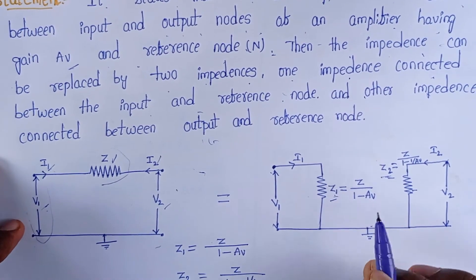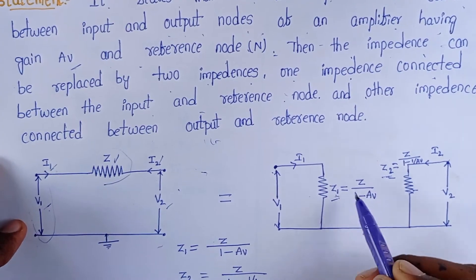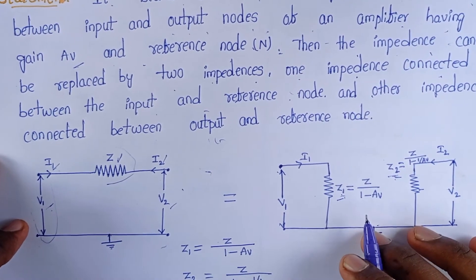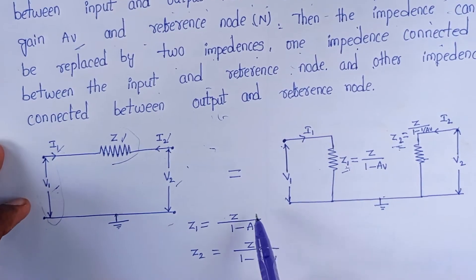Now, the question is, how will Z1 and Z2 be calculated? Z1 and Z2 will be calculated by using these formulas.